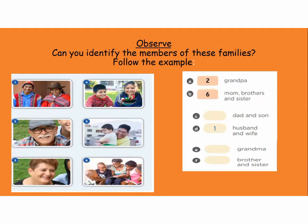Letter C nos está dando dad and son. ¿Dónde está el Dad and Son? ¿Dónde está el Papá y el Hijo? Number five. Very good. And la picture number five — ya está hecho. Vamos a la letter E. Letter E nos da a la grandma. ¿Dónde está la grandma? Number three. Very good.